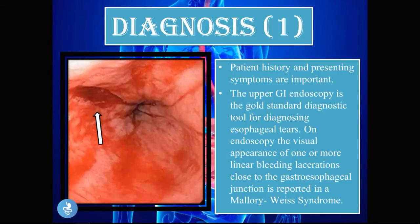Upper GI endoscopy is the gold standard diagnostic tool for esophageal tears. On endoscopy, the visual appearance of one or more linear bleeding lacerations close to the gastroesophageal junction is reported in Mallory-Weiss syndrome. You can see the picture of that longitudinal tear near the gastroesophageal junction as found on endoscopy.